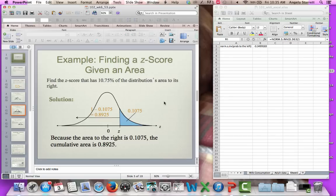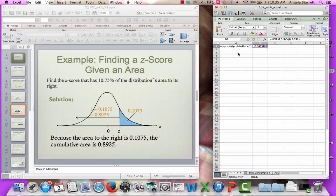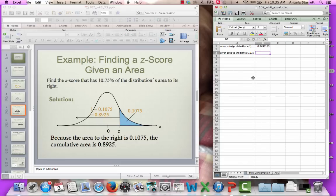What about finding the z-score that has 10.75% of the distribution's area to its right? This is one of those where we're going to have to do some math. So here I'm given area to the right, 0.1075. So I'm given the area to the right.